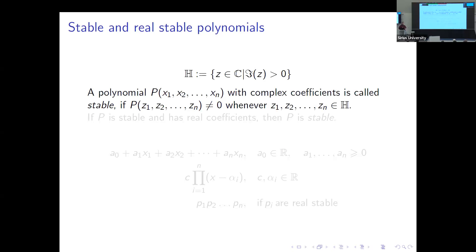Let's start with stable polynomials. The definition should be less or more known to people who work in differential equations, because such polynomials don't have zeros in the upper half plane — or say the right half plane. It's of course classical. But we speak on applications in combinatorics, not in differential equations.